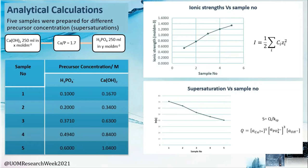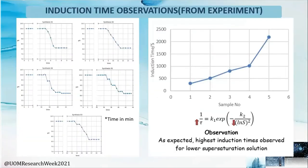We analytically calculated the ionic strength and supersaturation for these five different samples. Sample number one had the lowest ionic strength and highest supersaturation, while sample number five had the highest ionic strength and lowest supersaturation. As expected, induction time increased with lower supersaturation — sample number five recorded the highest induction time with the lowest supersaturation, and sample number one the opposite.